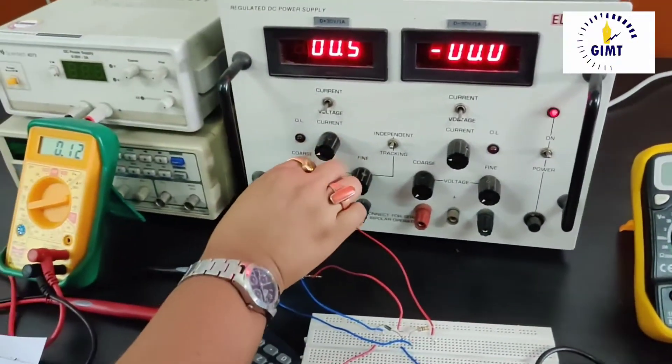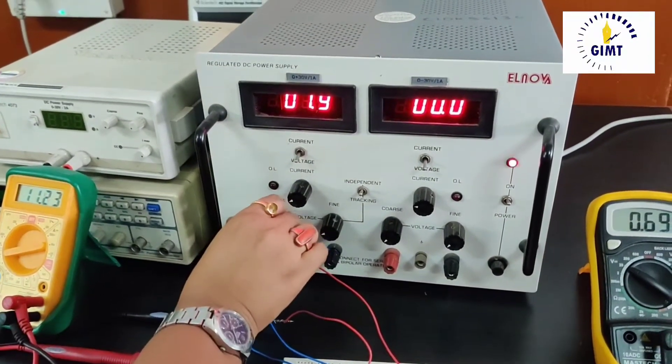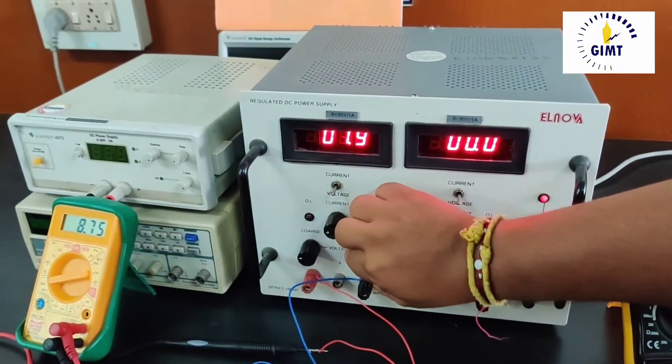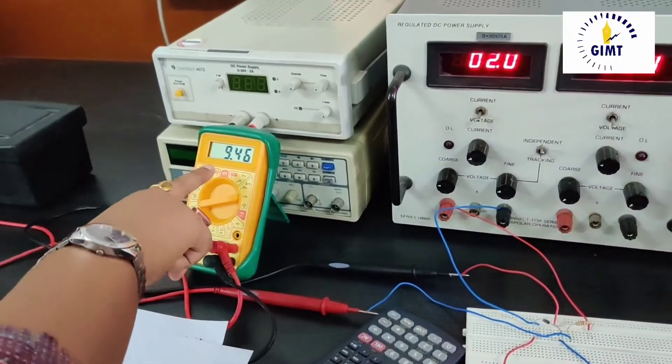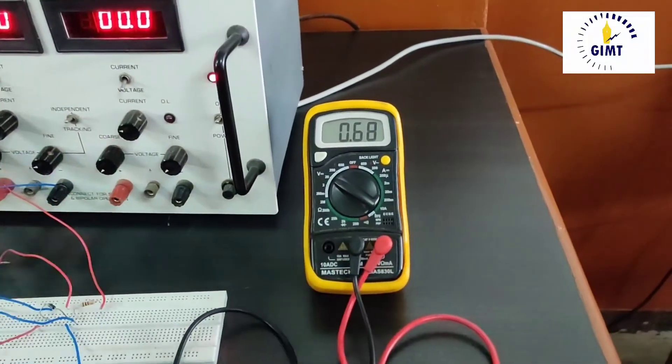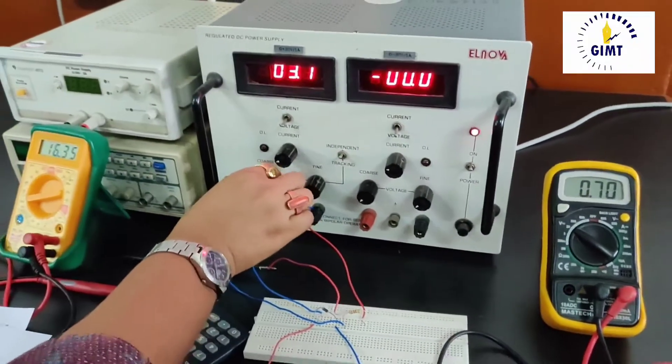Similarly, if we go on changing this, suppose I will bring it to 2 volt. At 2 volt my diode current is showing as 9.46 milliampere and the diode voltage is showing as 0.68 volt. Then again if I see at 2.5 volt, the diode current has increased that is 12.2 milliampere whereas the voltage has increased slightly 2.69 volt.